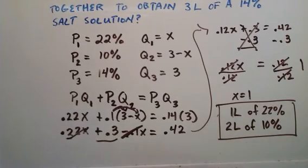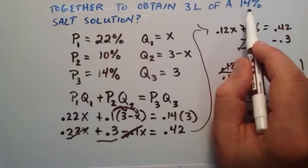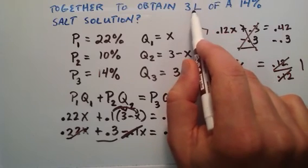If we combine 1 liter of a 22% salt solution and 2 liters of a 10% salt solution, we will have an end result which is a 14% salt solution that is 3 liters in volume.